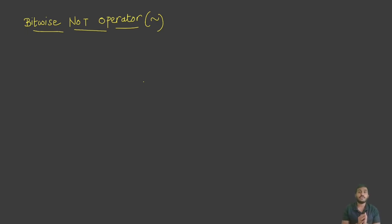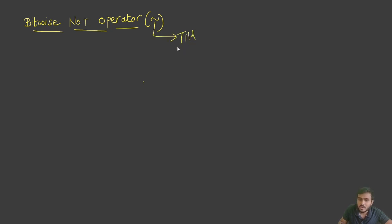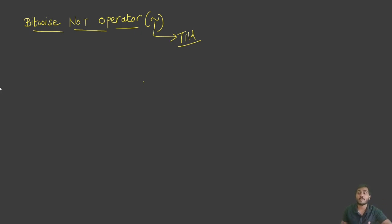In this video we are going to discuss the bitwise NOT operator in detail. This operator is represented by a tilde symbol, which can be found on your keyboard just above the Tab key. This symbol is used to indicate the bitwise NOT operator in C++. This operator is also called the negation operator.